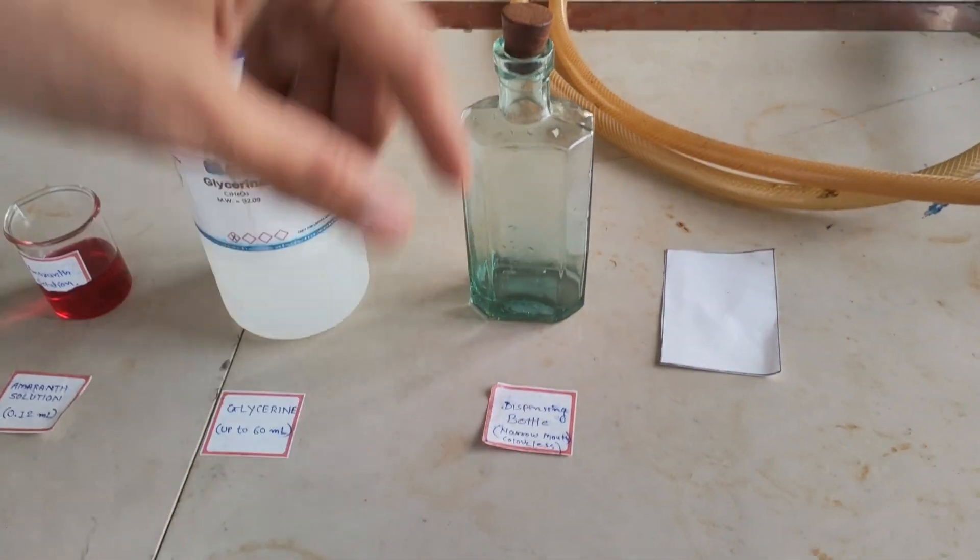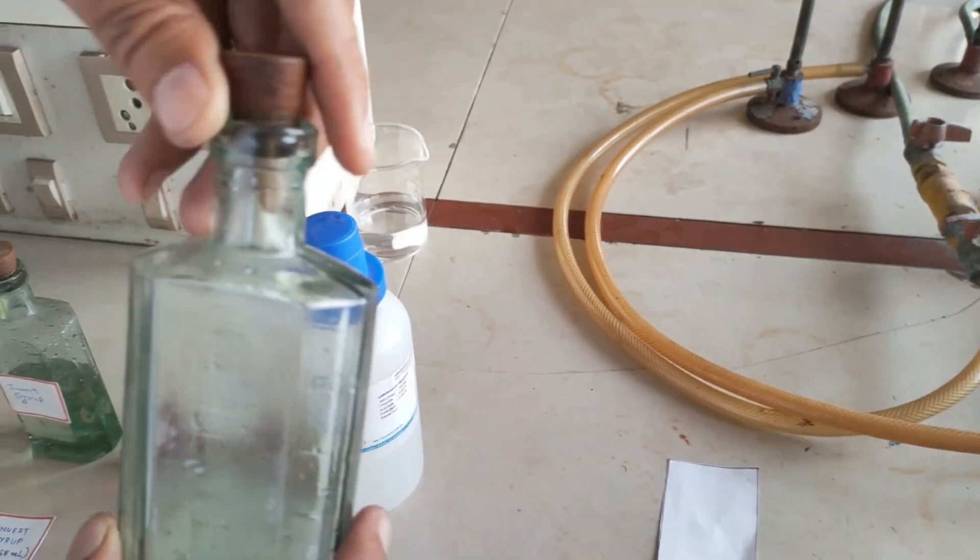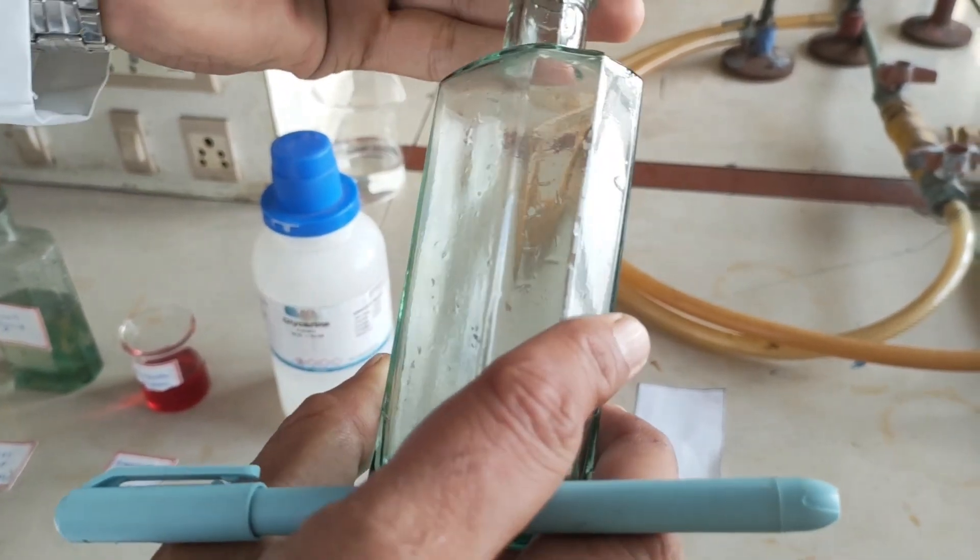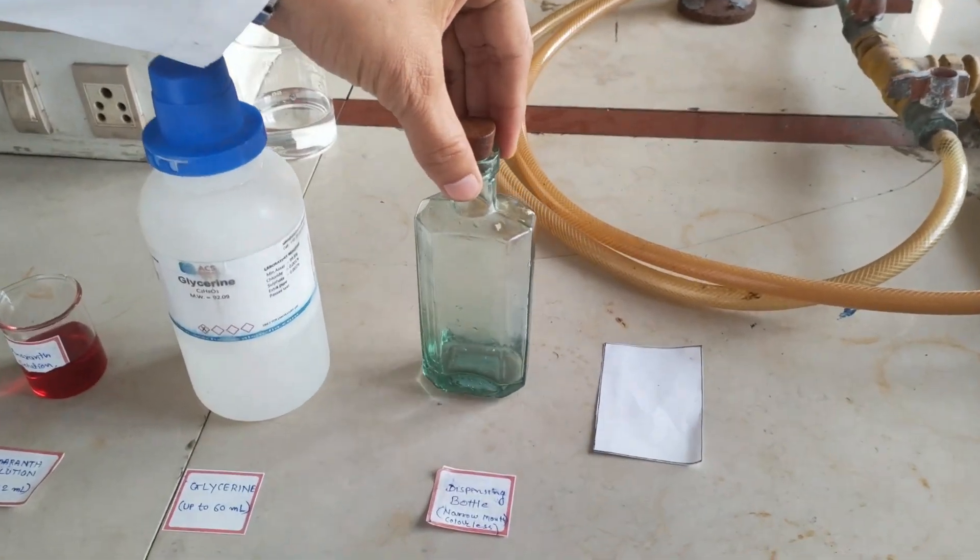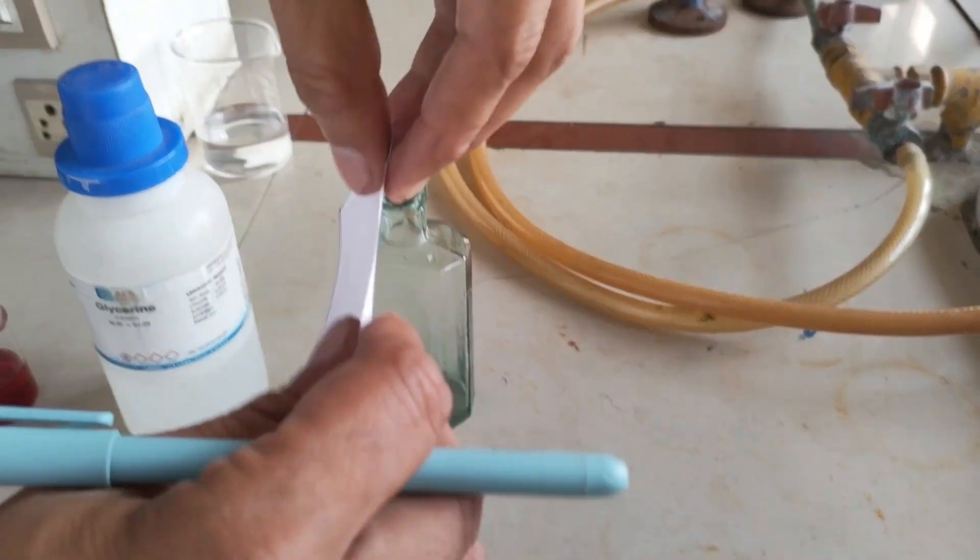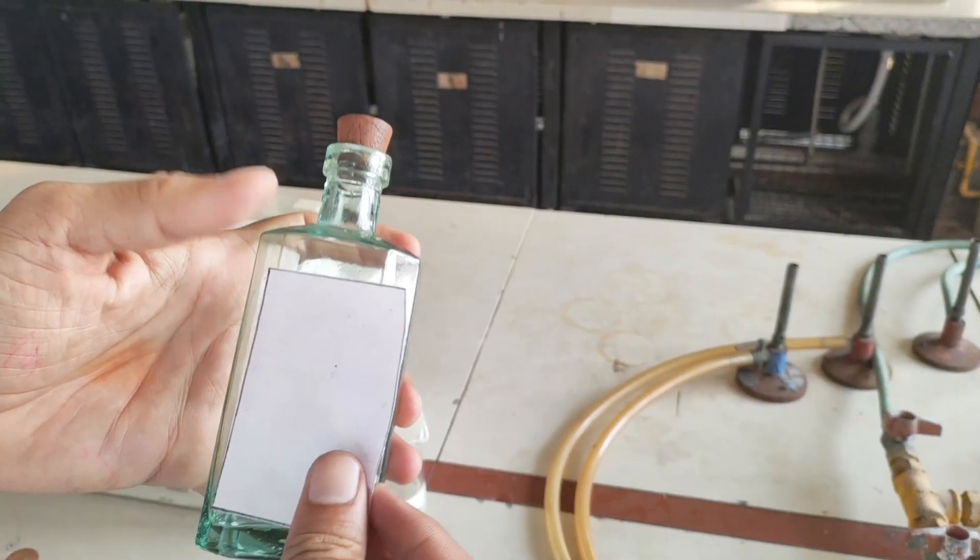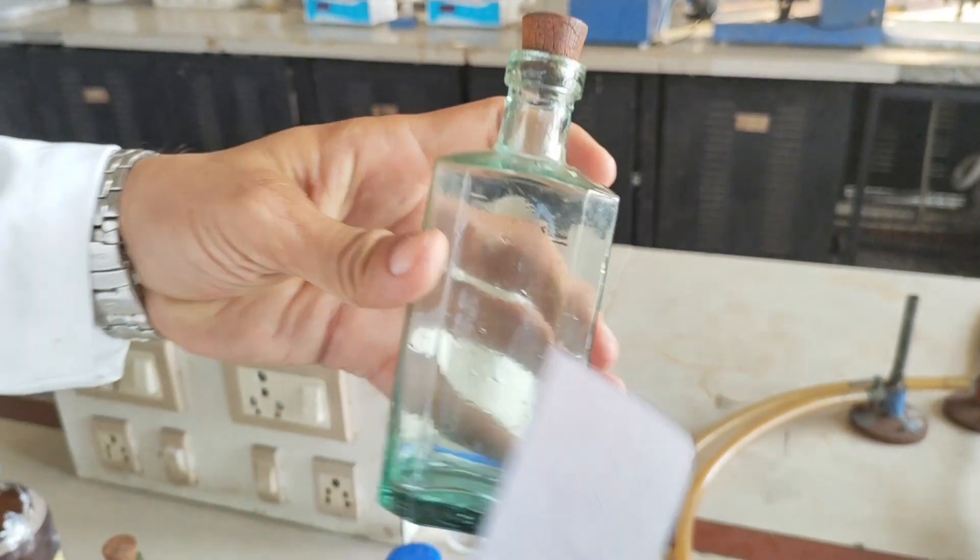After preparation we are going to dispense our formulation into a dispensing bottle, a narrow mouth colorless dispensing bottle. We are going to paste the final label over this container with appropriate information.